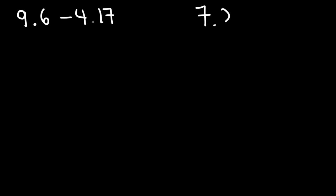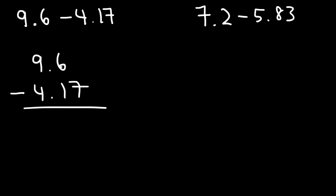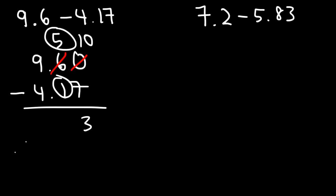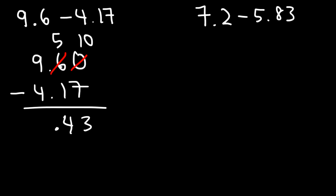For practice, try these two problems: 9.16 minus 4.17 and 7.2 minus 5.83. For the first one, line up the decimal points and add a zero to make 9.160. We can't do 0 minus 7, so borrow a 1 from the 6, making it a 5, and the 0 becomes 10. So 10 minus 7 is 3, then 5 minus 1 is 4, and 9 minus 4 is 5. The answer is 5.43.